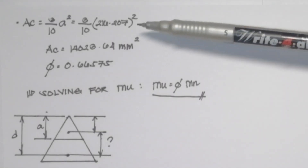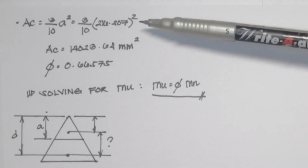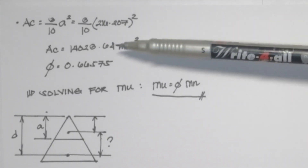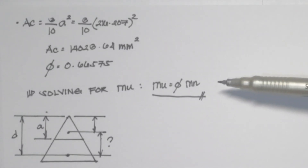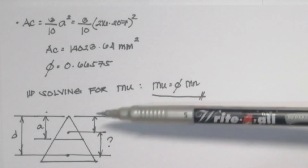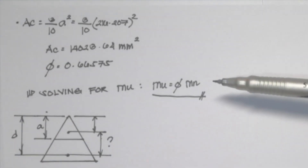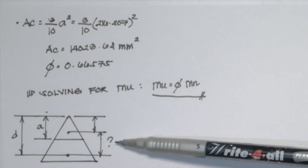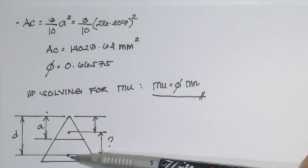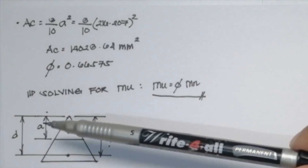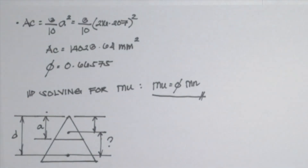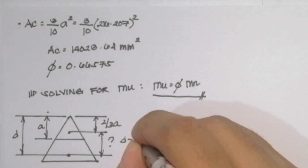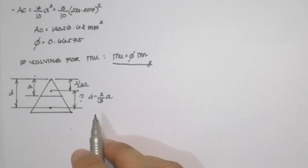The value of Ac = (3/10)·A² = (3/10)·(216.207)² = 14,023.64 mm². Our reduction factor φ = 0.66575. Since the compression block is triangular, its centroid is located at 2/3 from the top, so the moment arm is D − (2/3)·A = 440 − (2/3)·216.207.